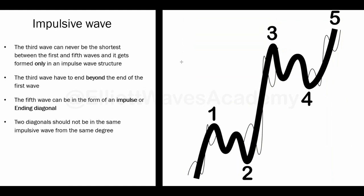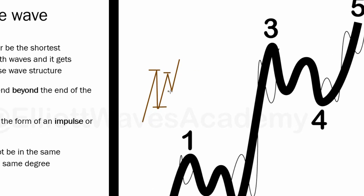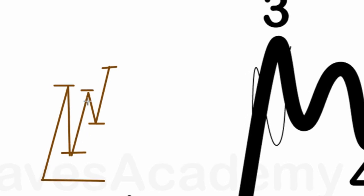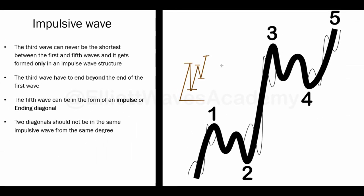There is also a rule that the majority neglect: Wave 3 should push the price beyond the point that represents the end of Wave 1. Some people make counts where this is violated. They may argue Wave 2 didn't exceed the beginning of Wave 1, and Wave 3 isn't the shortest — it's shorter than Wave 1 but not shorter than Wave 5 — so they think the count is valid. However, Wave 3 must push the price beyond the end of Wave 1.